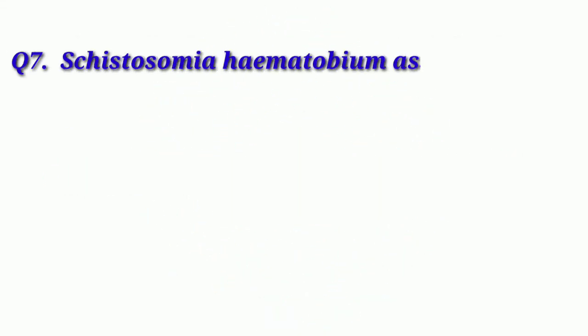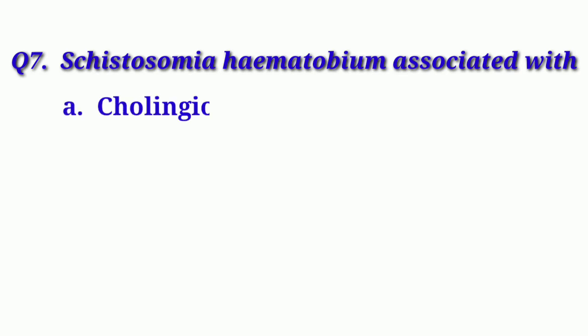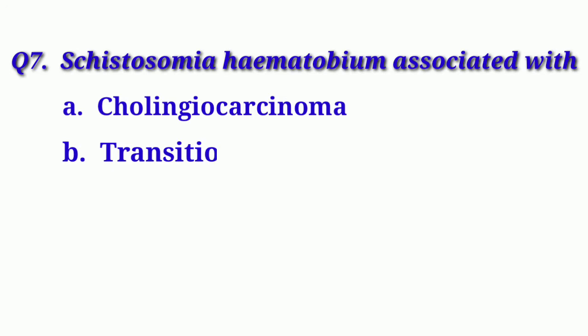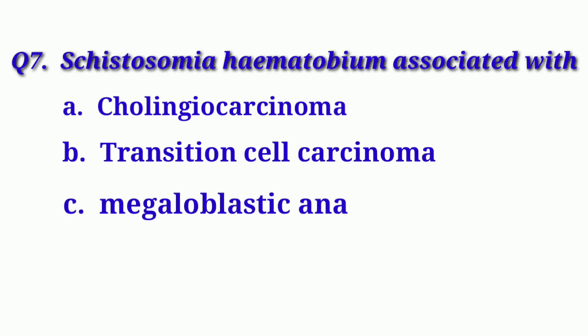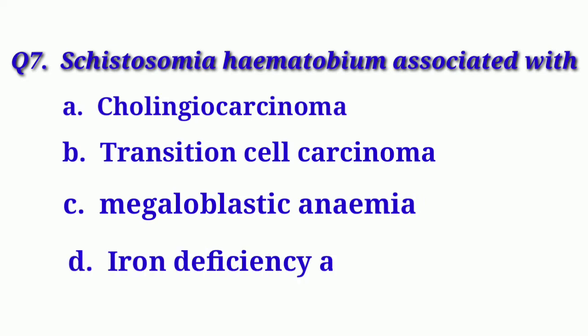Our next question is: Schistosoma haematobium is associated with. Option A: Cholangiocarcinoma. Option B: Transitional cell carcinoma. Option C: Megaloblastic anemia. And Option D: Iron deficiency anemia.